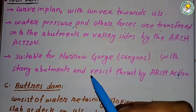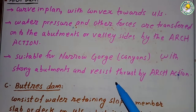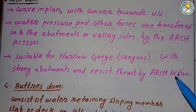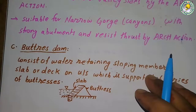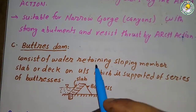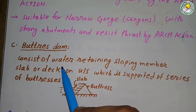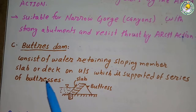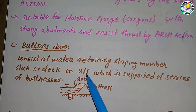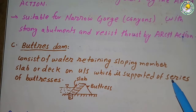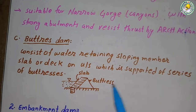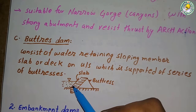The arch dam is suitable for narrow gorges or canyons with strong abutments, and can resist thrust by arch action. A buttress dam consists of a water-retaining sloped member — a slab or deck on the upstream — which is supported by a series of buttresses.